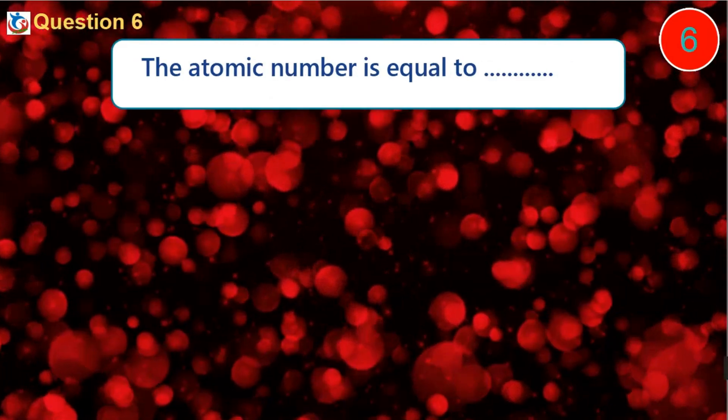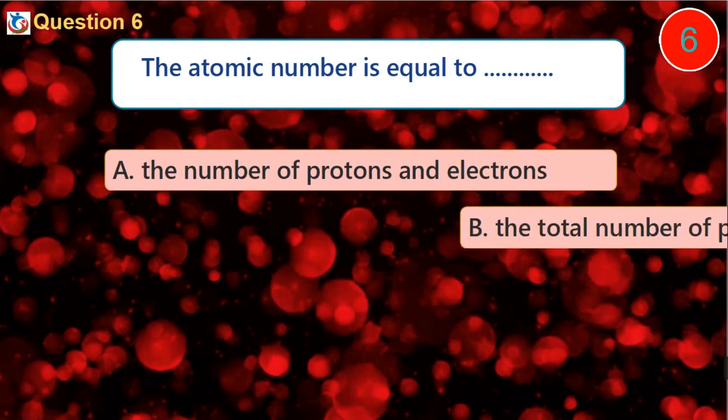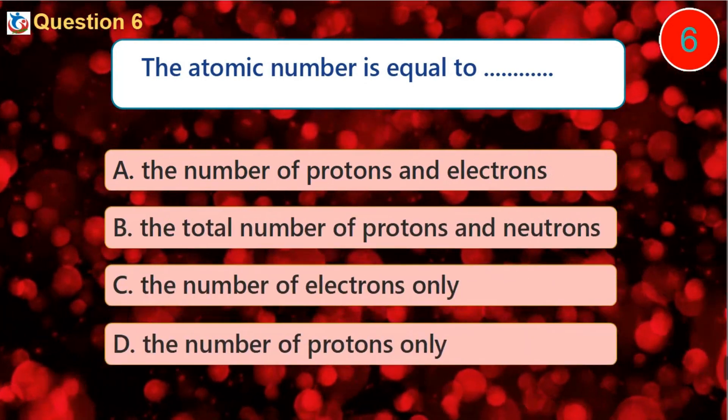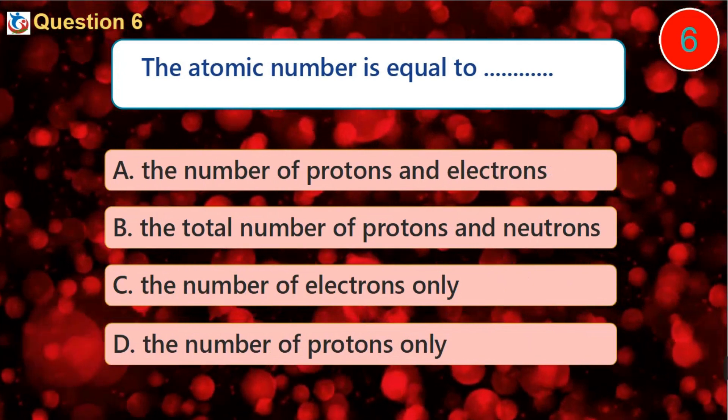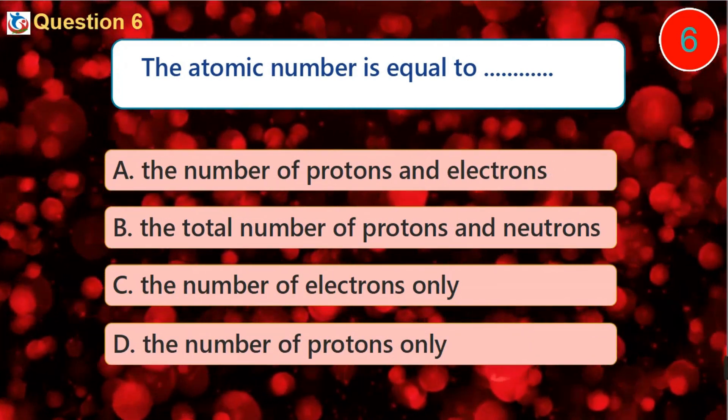Question 6. The atomic number is equal to: A. The number of protons and electrons B. The total number of protons and neutrons C. The number of electrons only D. The number of protons only